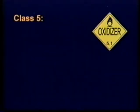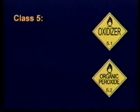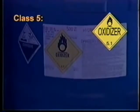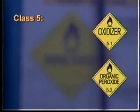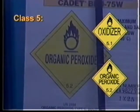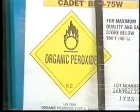Class 5 is divided into Division 5.1 oxidizers and Division 5.2 organic peroxides. Products in Division 5.1, oxidizers, such as hydrogen peroxide, generally yield oxygen readily and cause or contribute to the combustion of other materials. Products in Division 5.2, organic peroxides, include materials such as benzoyl peroxide, which may be thermally unstable compounds. Under certain conditions, an organic peroxide can begin to chemically decompose by itself, producing heat or combustion.